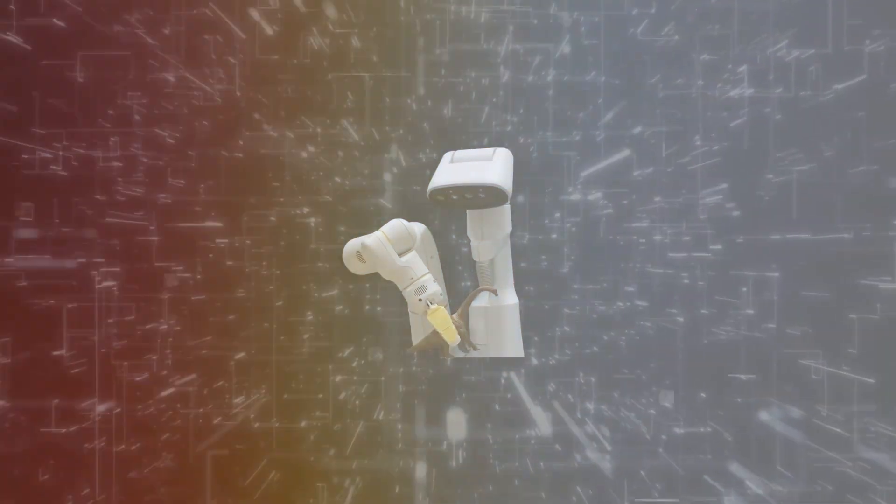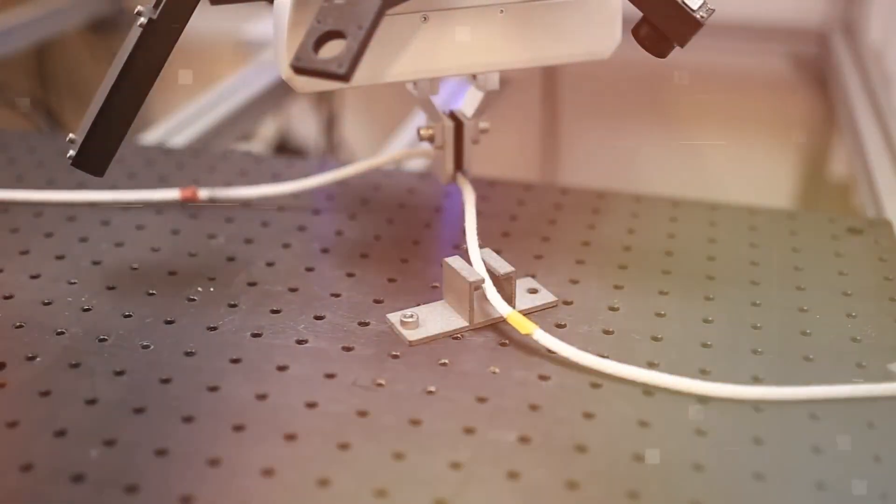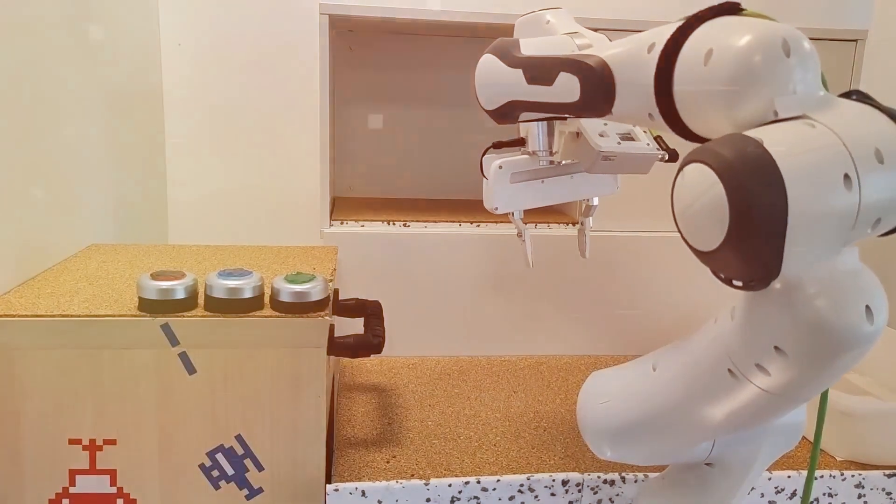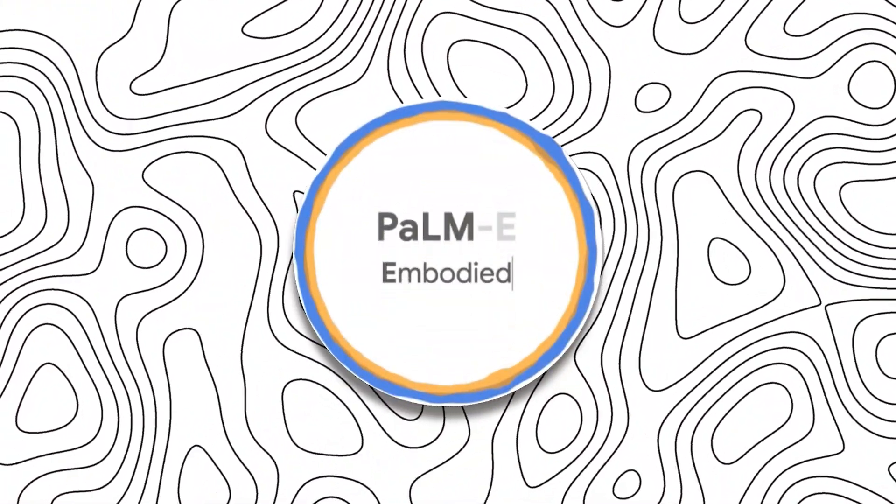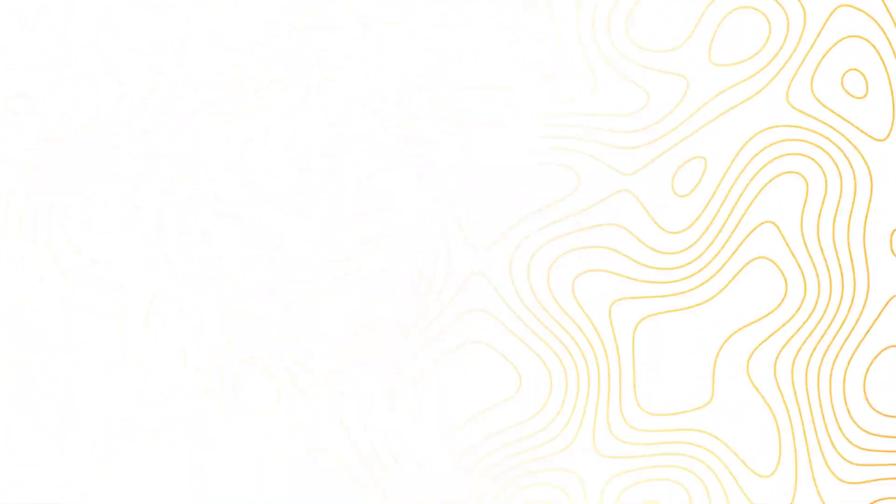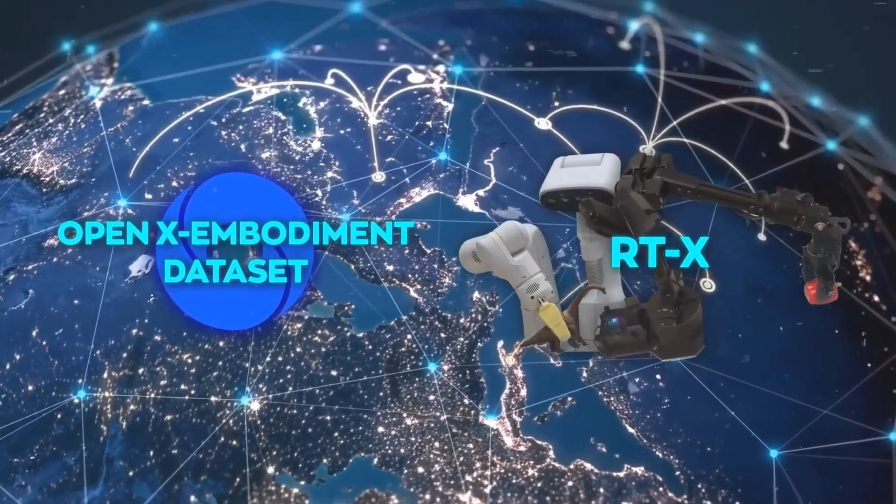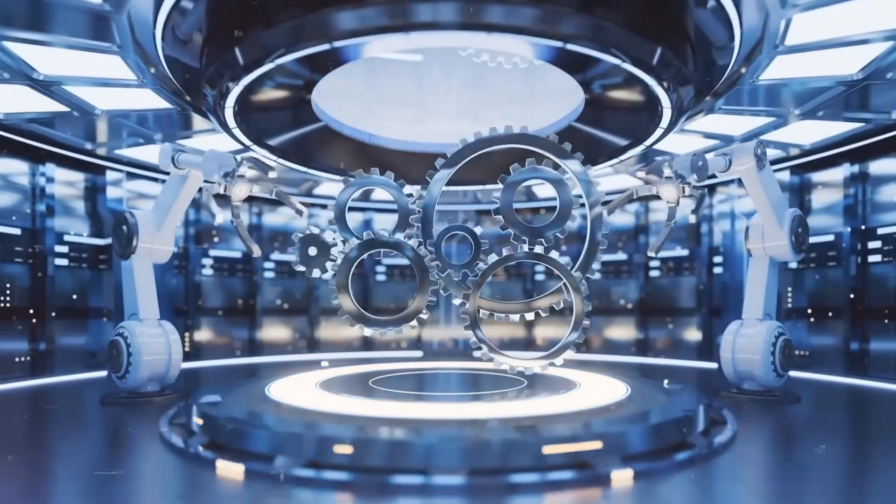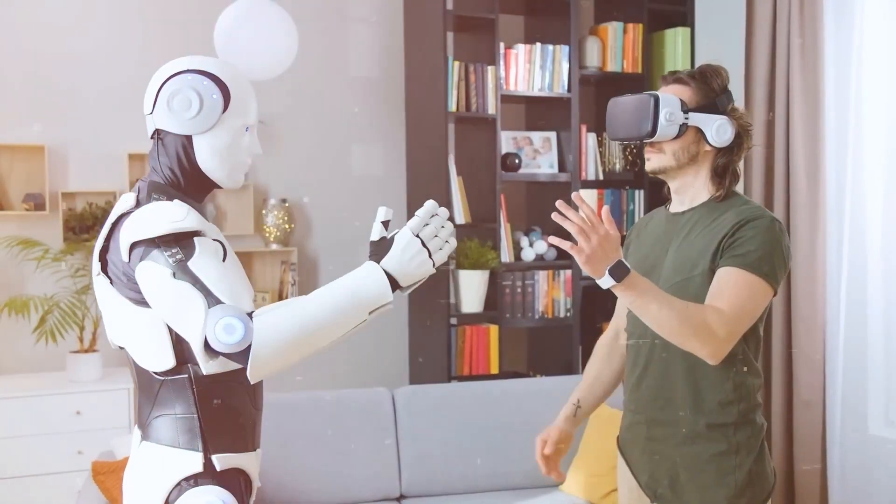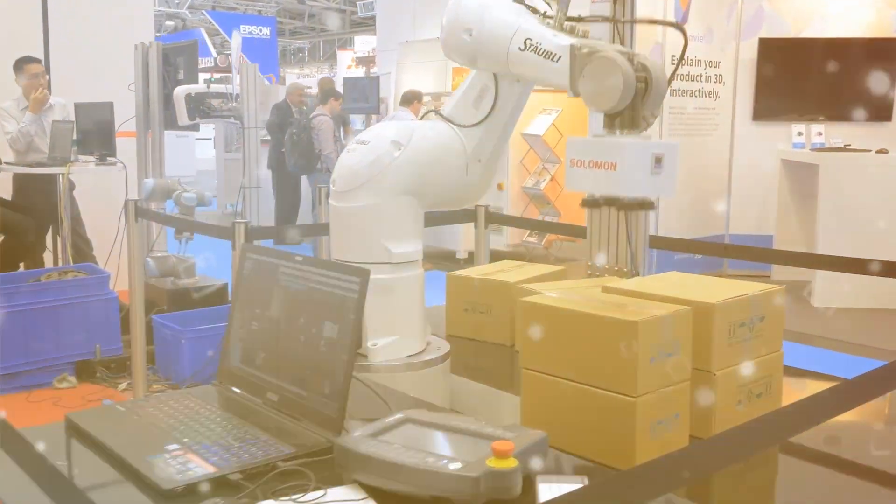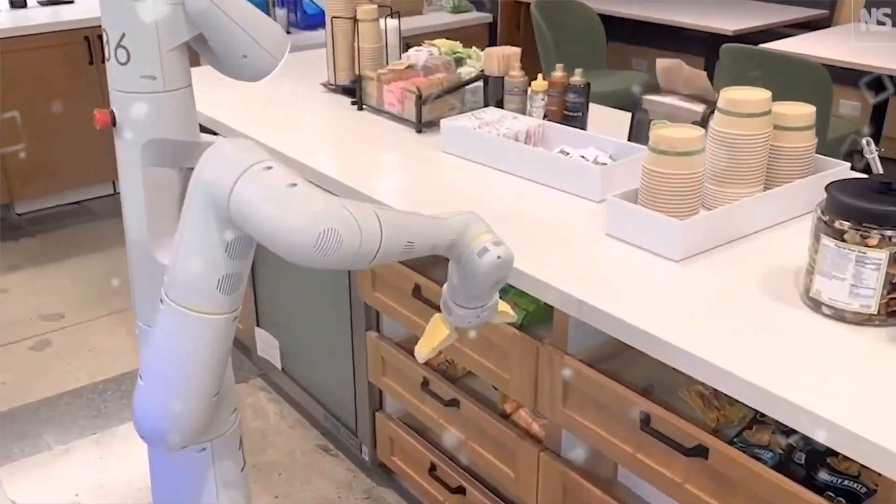RTX produces considerably improved robotic policies and, more crucially, dramatically increased generalization performance and emerging capabilities inherited from web-scale vision-language pre-training using two instantiations of VLAs based on PaLM-E and PaLi-X. RTX is not only a simple and successful improvement over existing VLM models, but it also shows the promise of developing a general-purpose physical robot capable of reasoning, problem solving, and information interpretation in order to execute a wide range of real-world activities.